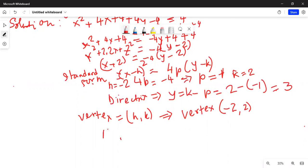Now the focus is h comma k plus p. Hence, the focus of the given parabola is h is minus 2, k is 2 and p is minus 1. Our focus is minus 2 comma 1.